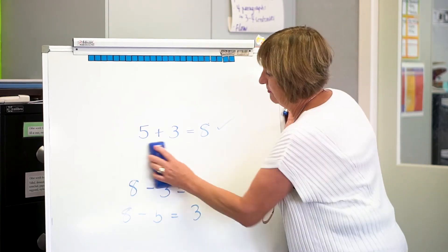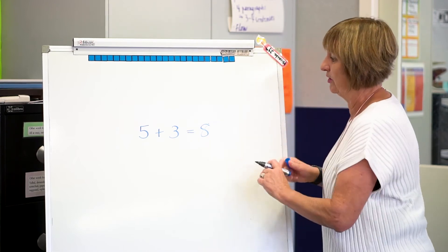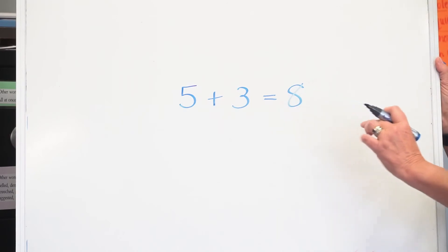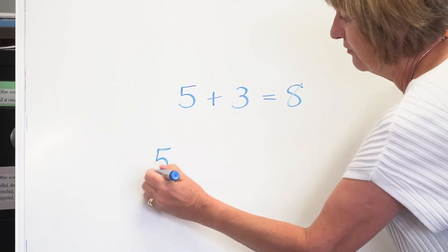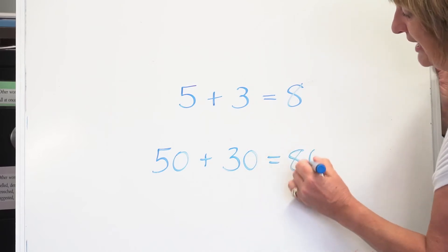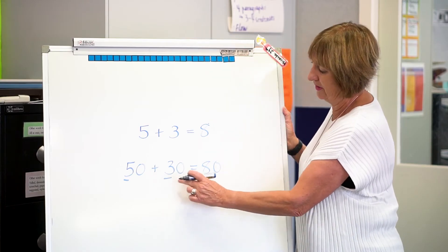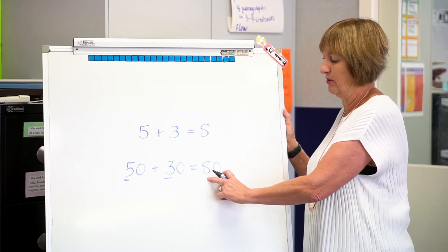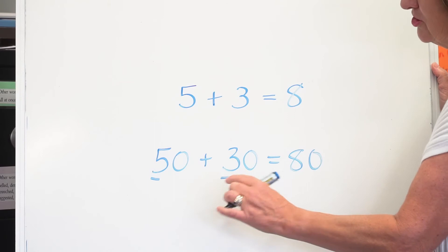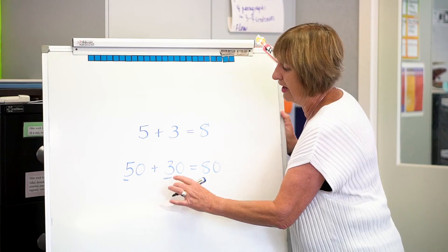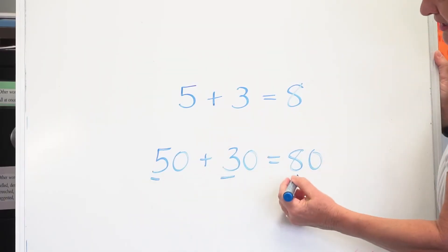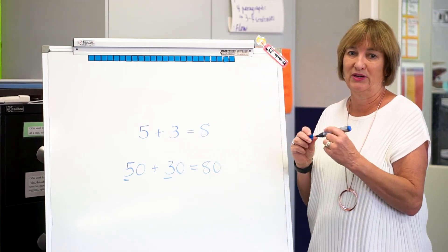The other aspect of facts and fact families that we would like students to really use well is: if you know 5 plus 3, you also know 50 plus 30. You know that that's going to be 80, because any time you see the combination of 5 and 3 in the same place, it will always come up with an 8 or an 80. This helps students when they're adding to do it in one move — rather than counting up 50, 60, 70, 80, they can say 50 plus 30 is 80 because they know 5 plus 3 is 8.